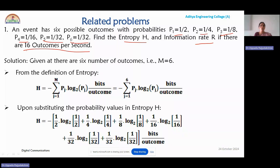The outcome rate small r is given as 16. Now you have to calculate the entropy, then multiply the outcome rate and entropy to get the information rate. H equals minus summation J=1 to M of P_J log P_J base 2, in bits per outcome. Here M equals 6, the total number of messages.